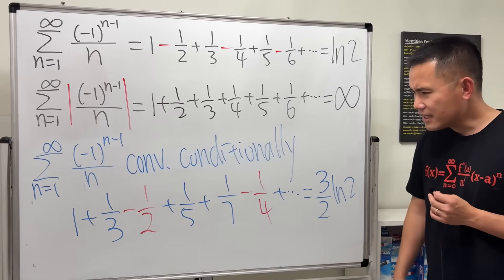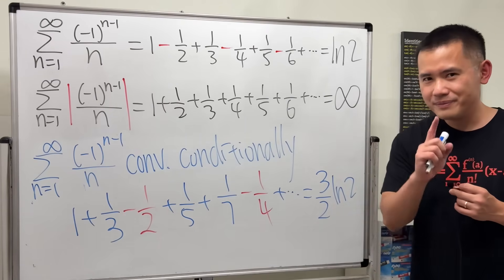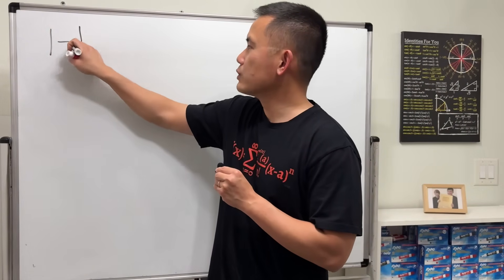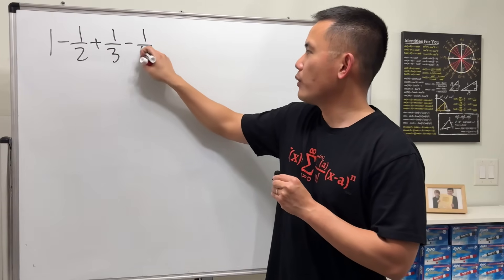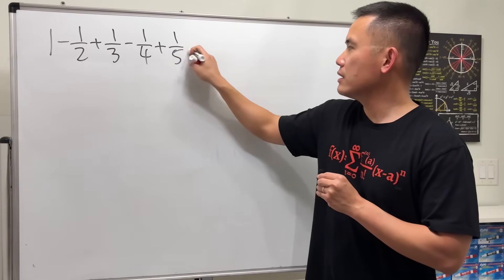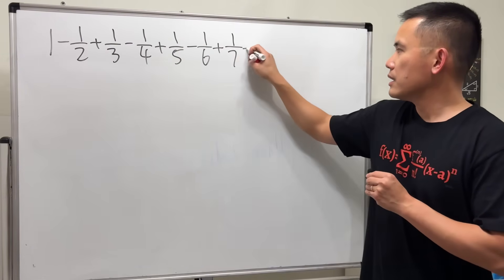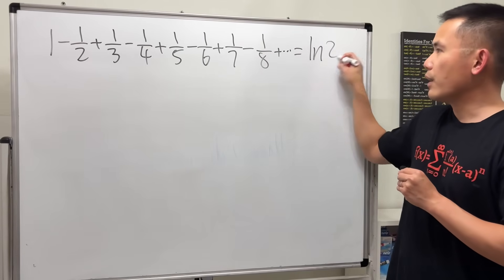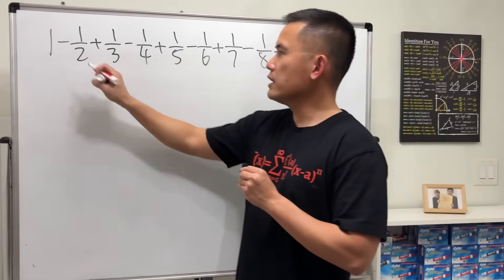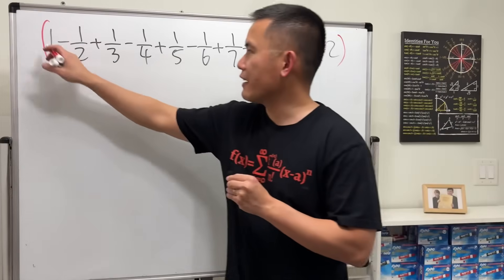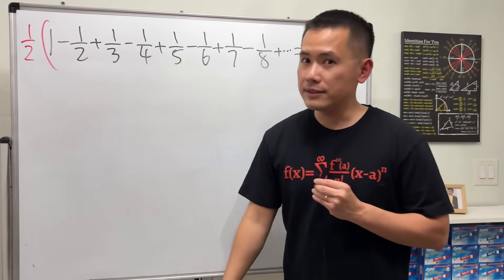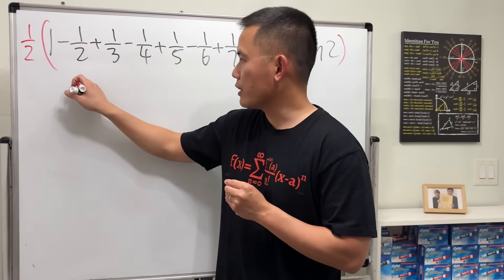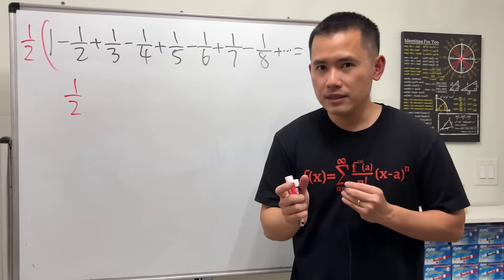Let me show you. Write down the original series: 1 minus 1/2 plus 1/3 minus 1/4, plus a few more terms, and this equals ln(2). Now multiply both sides by 1/2, and distribute the 1/2 through.